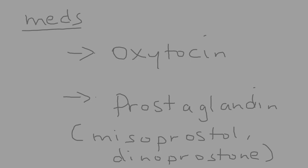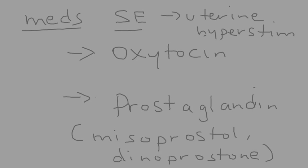Uterine hyperstimulation doesn't always happen. If you give oxytocin, for example, it may not hyperstimulate the uterus — it may just cause the necessary contractions you need to deliver. Same with prostaglandin. But one of the side effects of these medications is uterine hyperstimulation, where contractions are happening too fast, maybe every one minute. If a woman goes into uterine hyperstimulation, that can be damaging to the fetus. The fetus can become hypoxic and bradycardic, and the heart rate can drop. You want contractions and labor induction, but you don't want hyperstimulation.